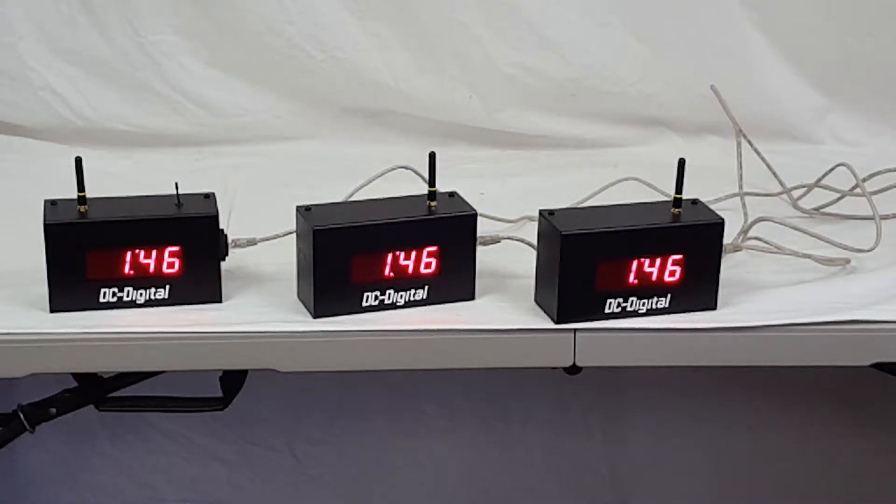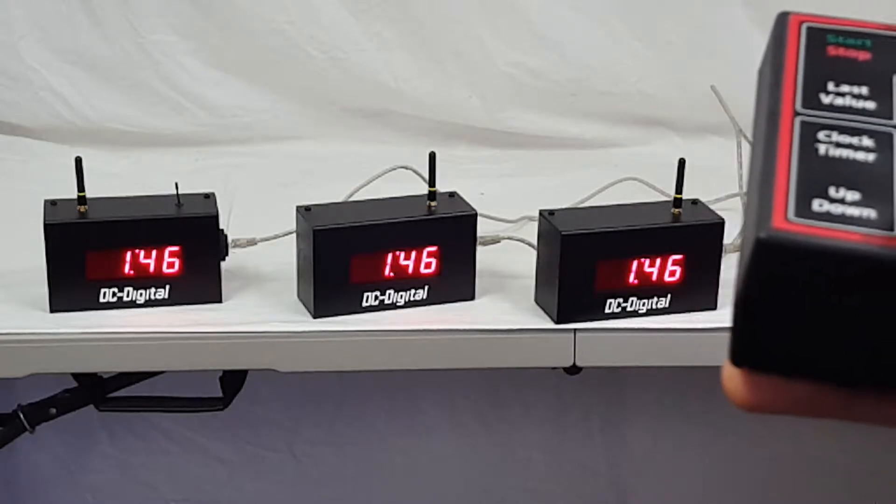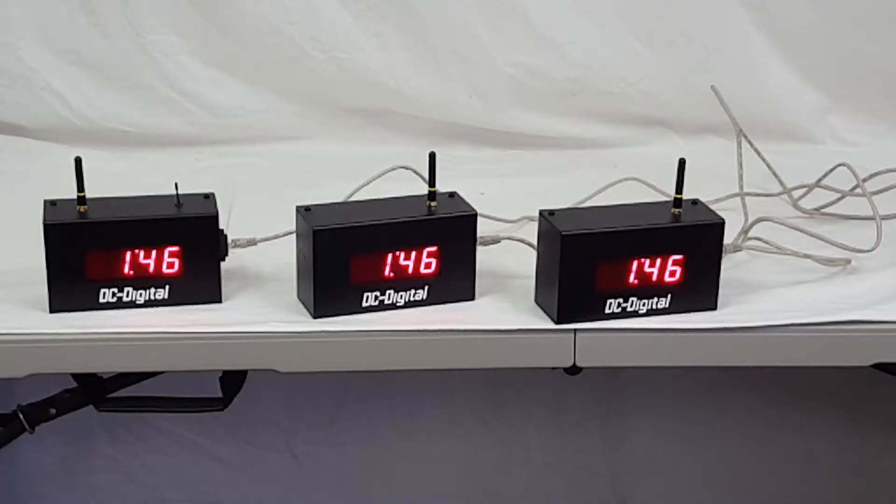Hello, this is Jim with DC Digital. Today I'm demonstrating a DC-10 UTW-System-W. It is wirelessly controlled with a handheld wireless controller, 2.4 gigahertz 64 milliwatt RF controller, and it is wireless between the master and the slave secondaries. That is a 900 megahertz radio, up to 1500 feet distance.